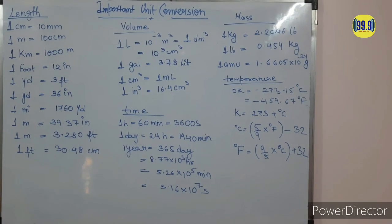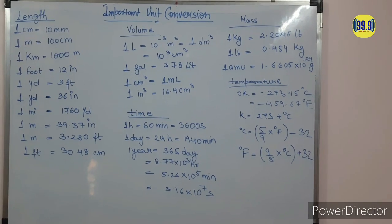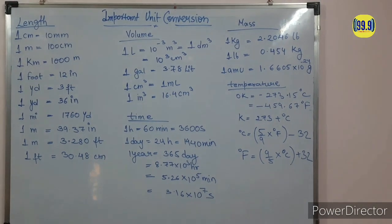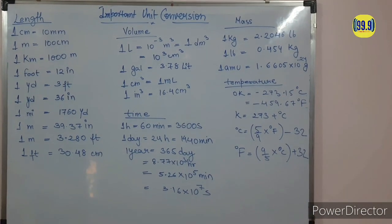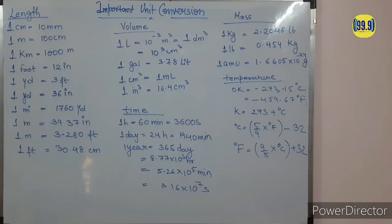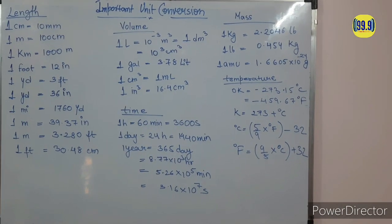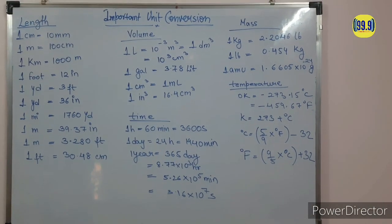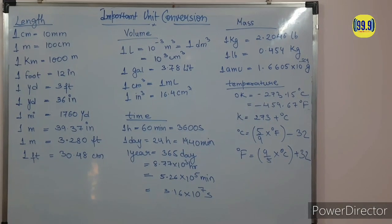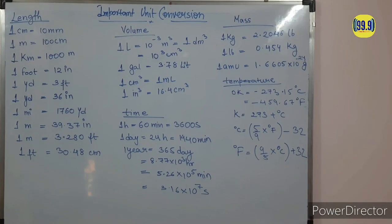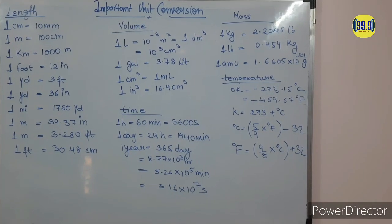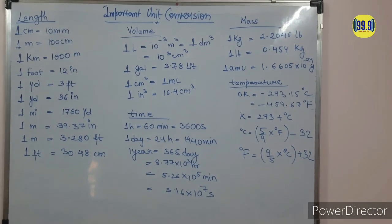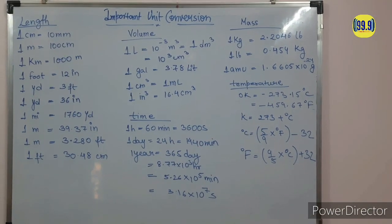1 yard is equal to 36 inch, 1 mile is equal to 1760 yards. 1 meter is equal to 39.37 inches, and 1 meter is also equal to 3.28 feet, and 1 foot is equal to 30.48 centimeters. These last meter-feet conversions are the frequently used unit conversions in process calculations.